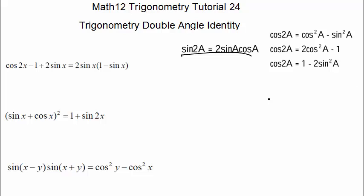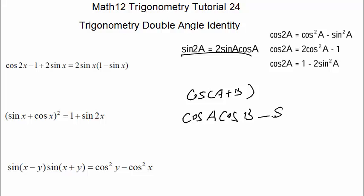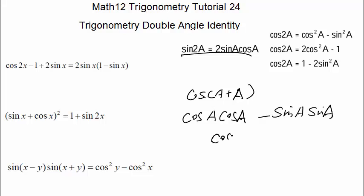For cosine 2a, we use cosine(a + b) = cosine a cosine b minus sine a sine b, and we change all the b's to a. So cosine 2a equals cosine²a minus sine²a, and we're done with the basic form.